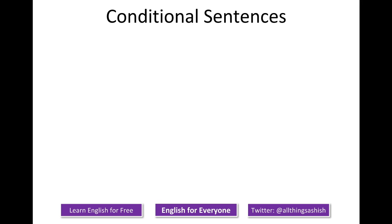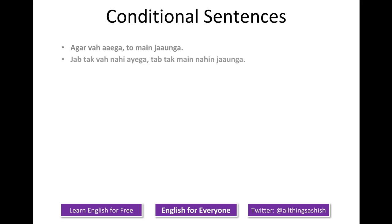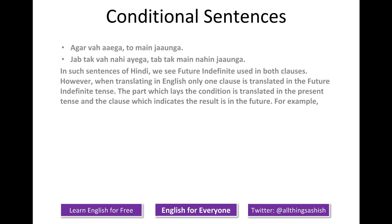Let's look at conditional sentences. 'Agar va aega, to me jaunga.' 'Jab tak va nahi aega, tab tak me nahi jaunga.' In such sentences in Hindi, we see future indefinite used in both clauses. However, when translating into English, only one clause is translated in the future indefinite tense. The part which lays the condition is translated in the present tense, and the clause which indicates the result is in the future.